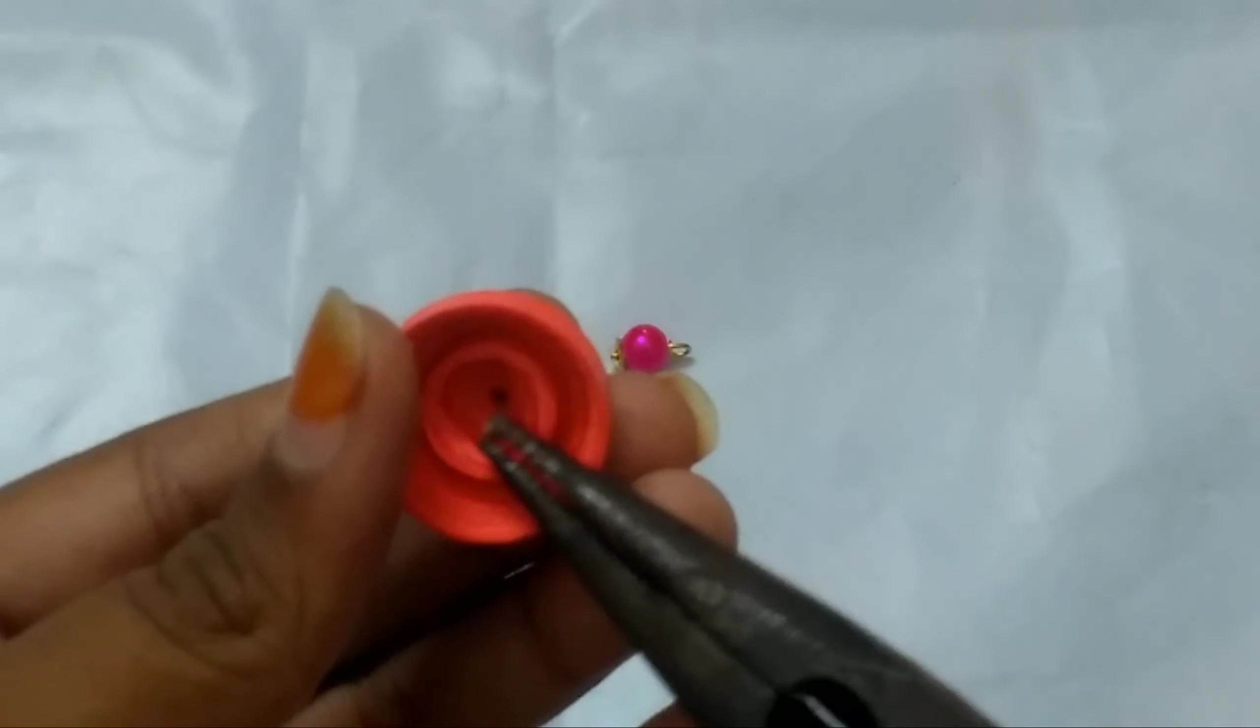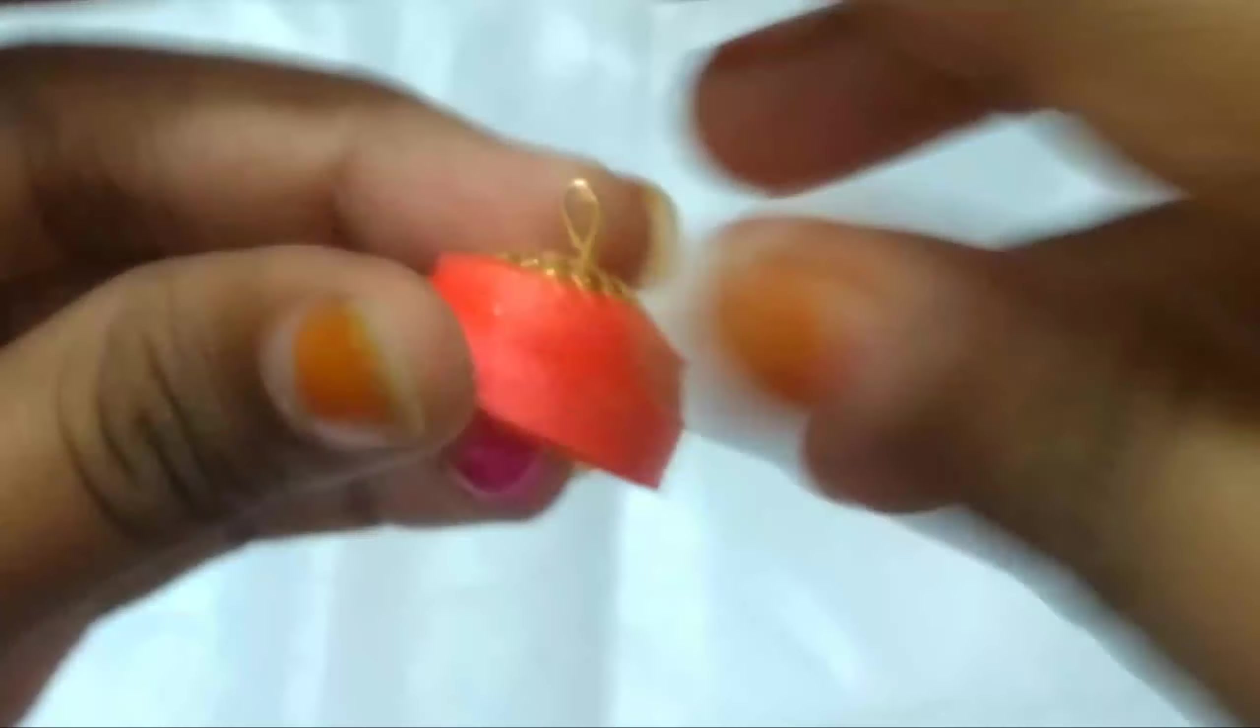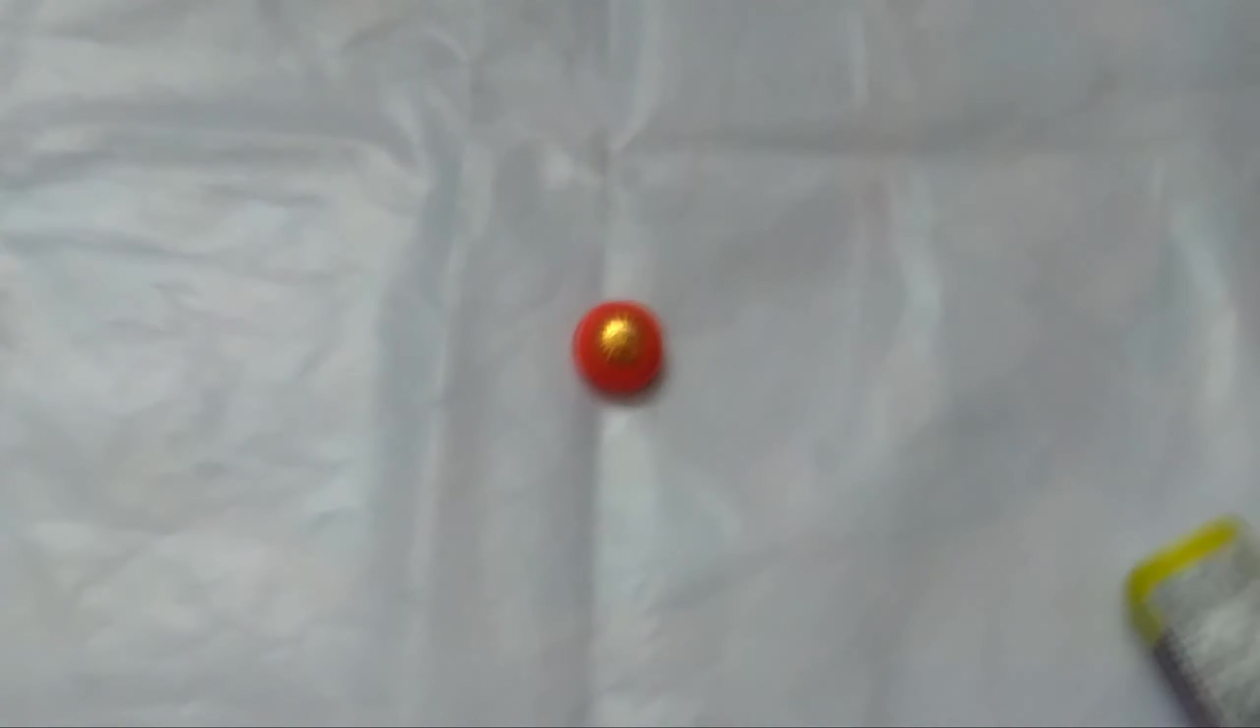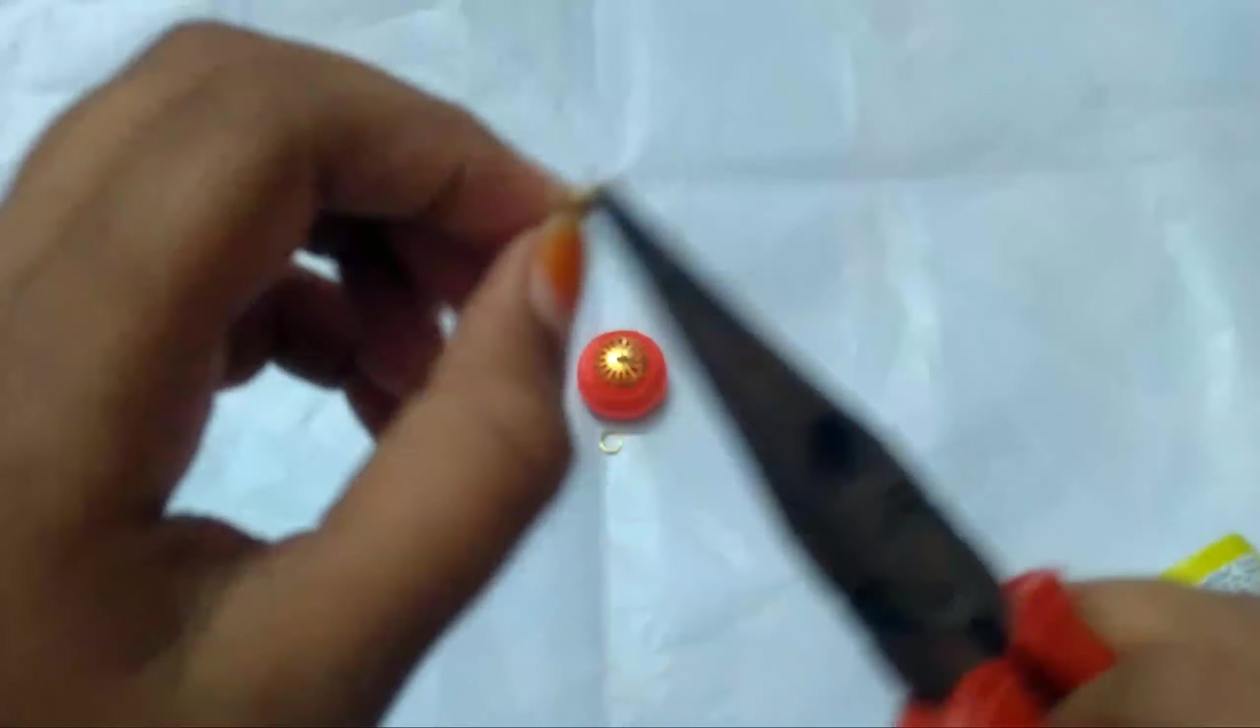After 5 minutes, twist it and make it like shown in this video. Now take the small hoop rings, twist them and make them like shown in this video.